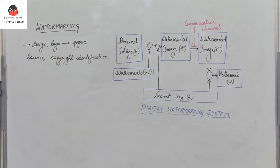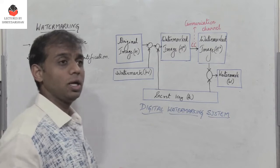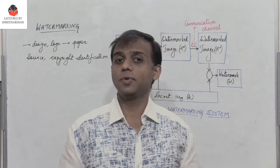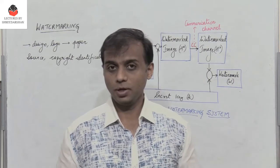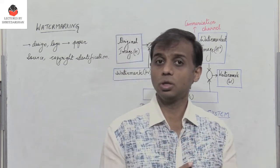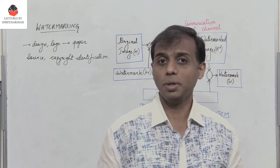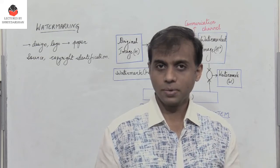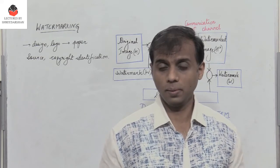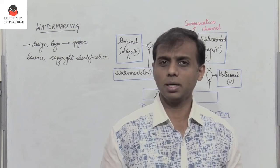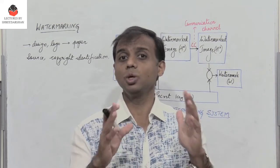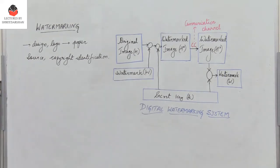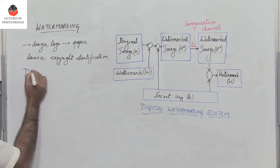When we talk about digital watermarking, because of digitization today it is very easy to make digital copies of information or data without any loss of information. So in order to identify the source or the content creator and for copyright protection, we have digital watermarking, where some kind of information is actually embedded into an image.